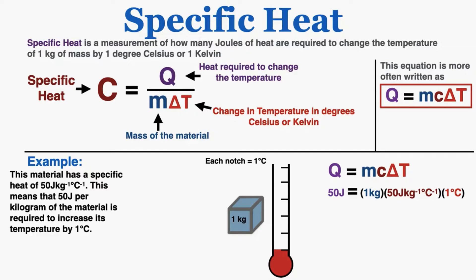This lecture is about specific heat and how to use the concept in equations. Specific heat is a measurement of how many joules of heat are required to change the temperature of 1 kilogram of mass by 1 degree Celsius or 1 Kelvin.